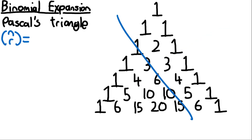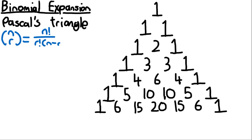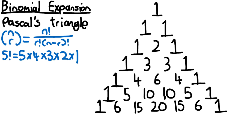Using this notation, we can find values without drawing the triangle by using a formula instead — it's much quicker. The formula is n factorial over r factorial times (n minus r) factorial. The exclamation mark means factorial: a number multiplied by all integers less than it. For example, 5 factorial equals 5 × 4 × 3 × 2 × 1, which equals 120.